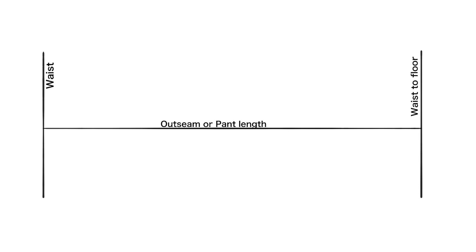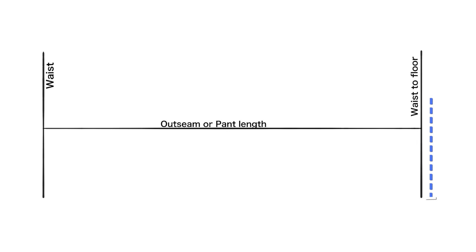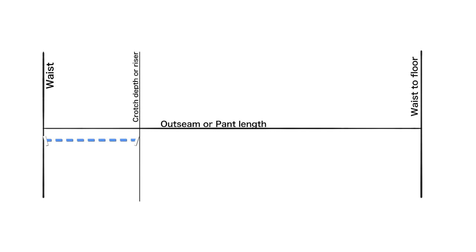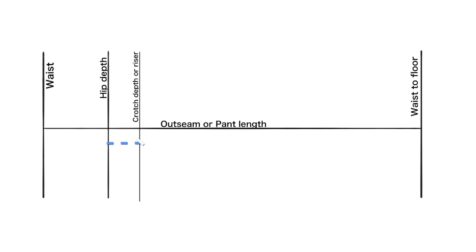Now that we're done with the calculations, we can move on to pattern drafting. First, let's establish our first three lines. On the top of your paper, draw a horizontal line for the waistline. From the waistline, square a vertical line for the outseam or pant length using the trouser length measurement — this should be centered. Draw another horizontal line for the ankle or floor length. From the waistline, mark down the crotch depth measurement and square out a horizontal line. Then divide the waist-to-crotch-depth measurement by three, mark up the result from the crotch depth line, and square out another horizontal line for the hip line.